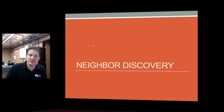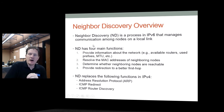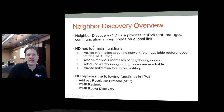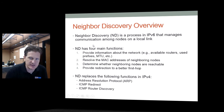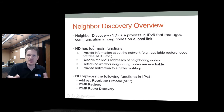Let's do a deep dive into neighbor discovery. Neighbor discovery is a process in IPv6 that manages communications among nodes on a local link. It serves four main functions: providing information about the network (what routers are available, what prefixes have been used, MTU size); resolving MAC addresses of neighboring nodes, replacing ARP; letting you know what nodes are reachable; and providing better redirection to another gateway if your current gateway goes down.